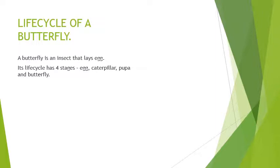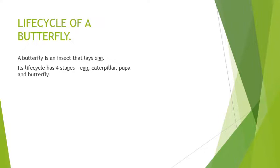So life cycle of a butterfly has four stages: egg, caterpillar, pupa, and butterfly. First egg will be there. Egg will be converted into caterpillar. Caterpillar will be converted into pupa. And pupa at the last will be converted into butterfly. So four stages of life cycle of a butterfly is there: egg, caterpillar, pupa, and butterfly.